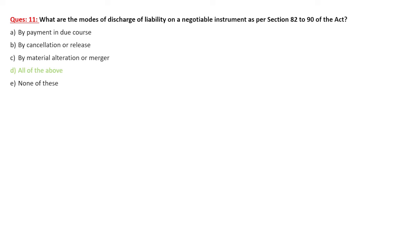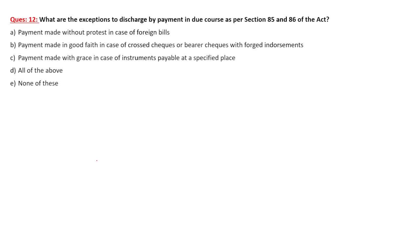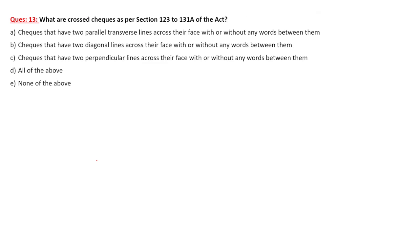What are the modes of discharge of liability of a negotiable instrument? By payment, by cancellation, and by material alteration. Material alteration includes change in amount or change in date. If B makes a material alteration to a check given by A, then A has no liability on that check. Other modes include merger — merging the instruments. What are the exceptions to discharge by payment in due course as per Sections 85 and 86? Payment made without protest in case of foreign bills, payment made in good faith in case of a crossed check, and payment made within grace days.